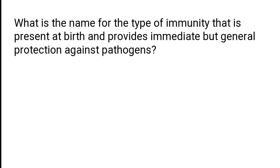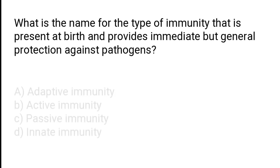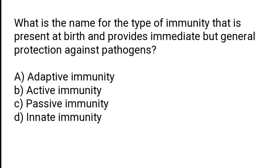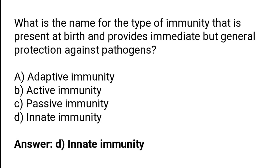What is the name for the type of immunity that is present at birth and provides immediate but general protection against pathogens? The correct answer is option D — innate immunity is the type of immunity that is present at birth and provides immediate but general protection against pathogens.